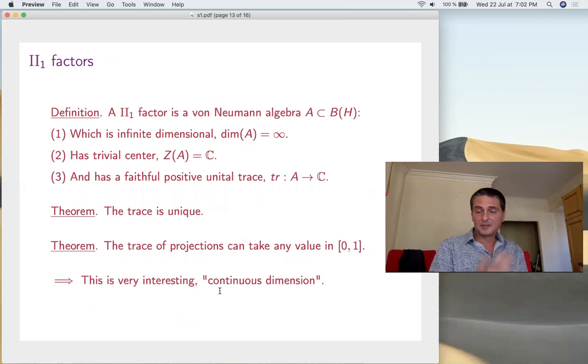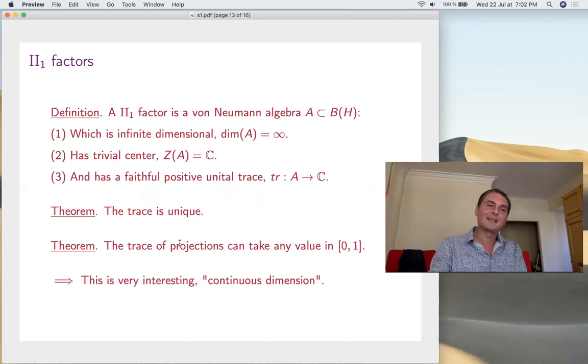Let's get back to the type II₁ factors first, because these are some of the interesting things. That's, by definition, a von Neumann algebra which is infinite dimensional with trivial center and has a trace. We can prove that the trace is unique. Also, very interestingly, von Neumann and Murray discovered this: the traces of projections can take any value between 0 and 1. It's a kind of continuous dimension property. Very interesting. Besides these group algebras, there is a factor which is very interesting: the hyperfinite one. That's the idea here. It's a discovery of Murray and von Neumann. No matter how you take inductive limits of matrix algebras and you close, weakly close, when you're done, you get the same type II₁ factor, independent of the limiting procedure. That's the so-called R, the hyperfinite type II₁ factor.